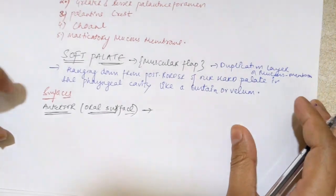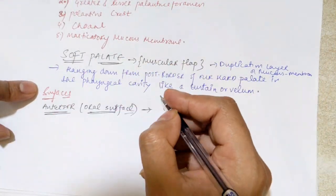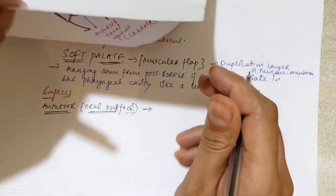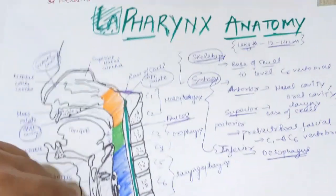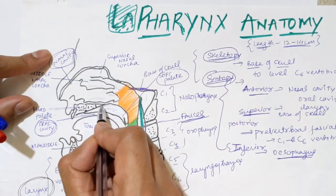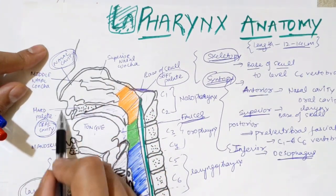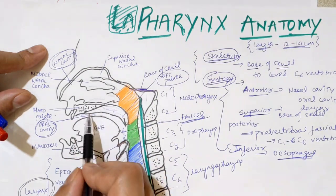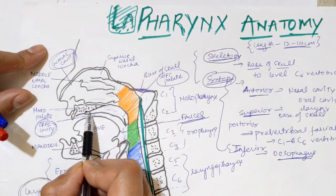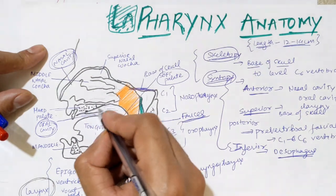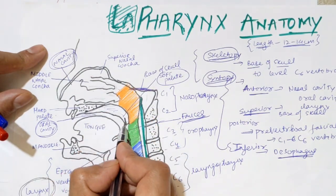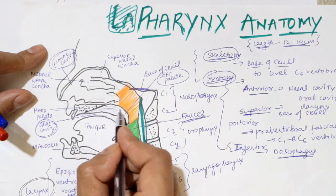The oral surface is attached to the posterior border of our hard palate. You can see in this sagittal diagram — the dotted area is the bony hard palate. This is a sagittal section showing the nasal cavity and the tongue. The hard palate occupies this area up to this lateral line, and after that your soft palate begins.